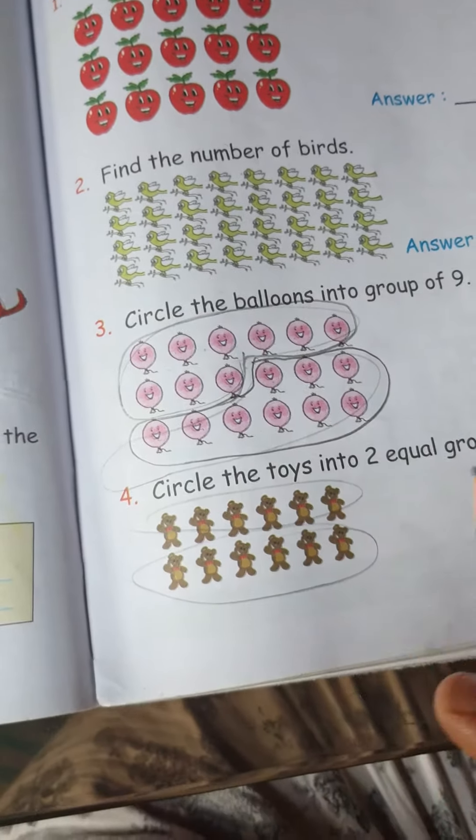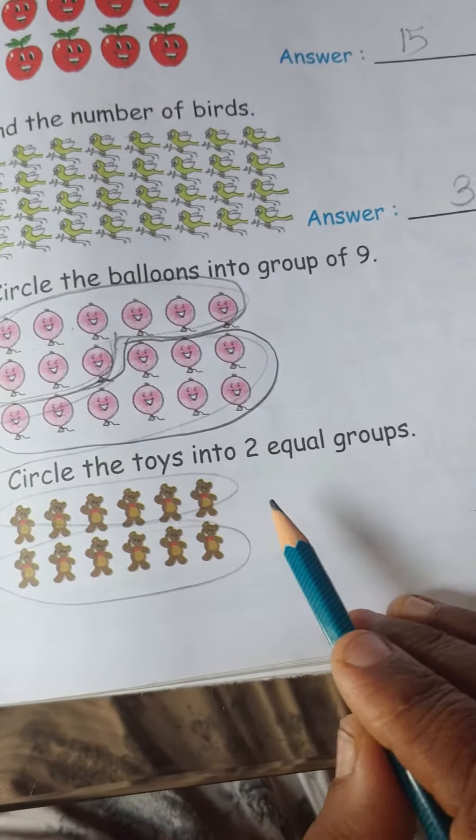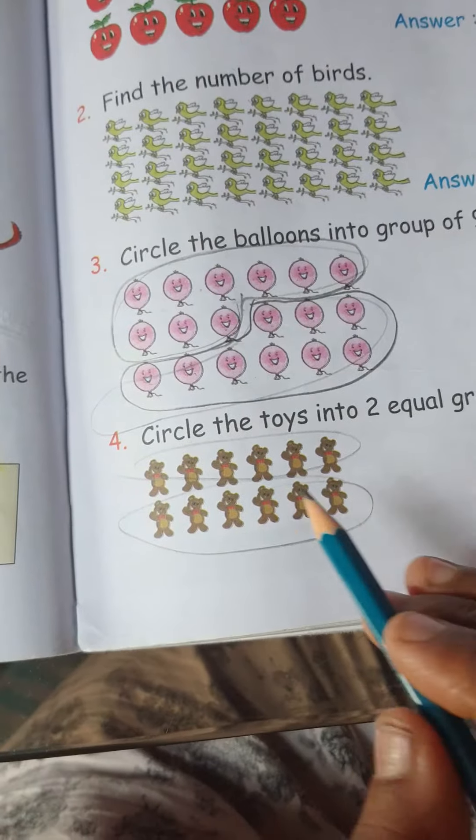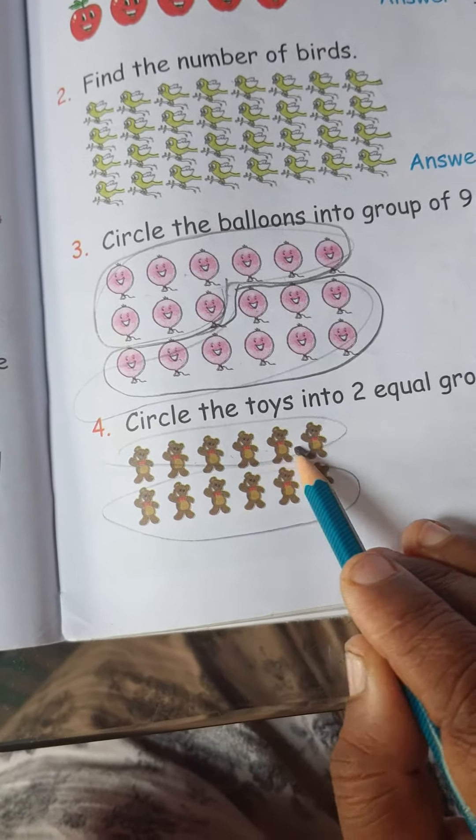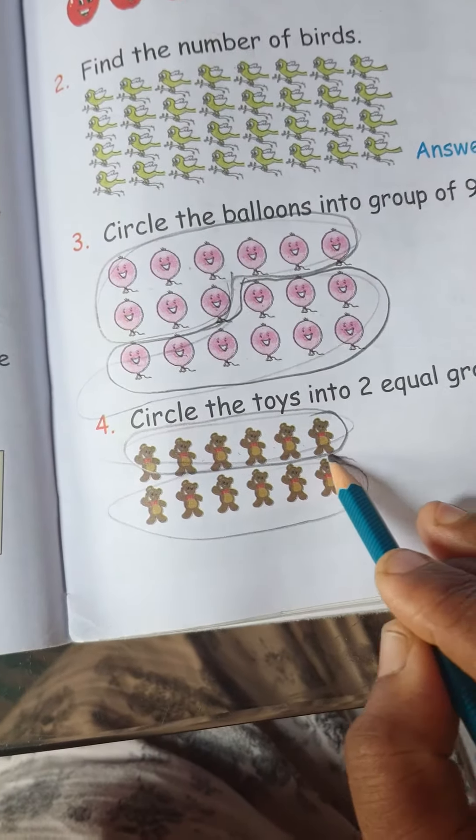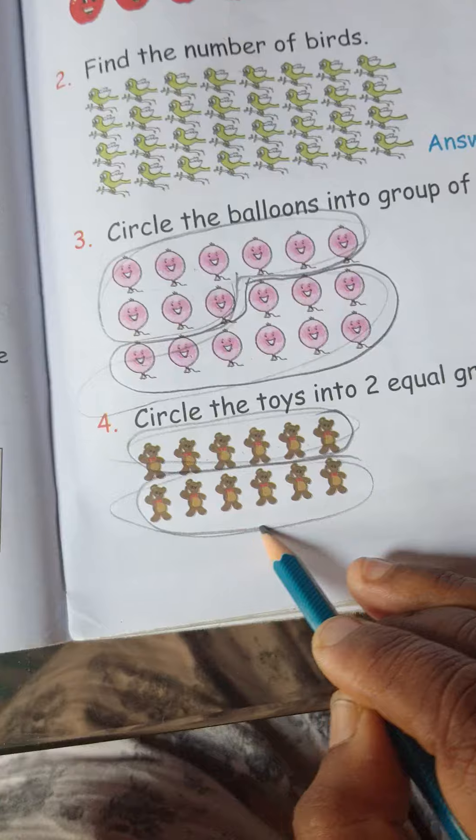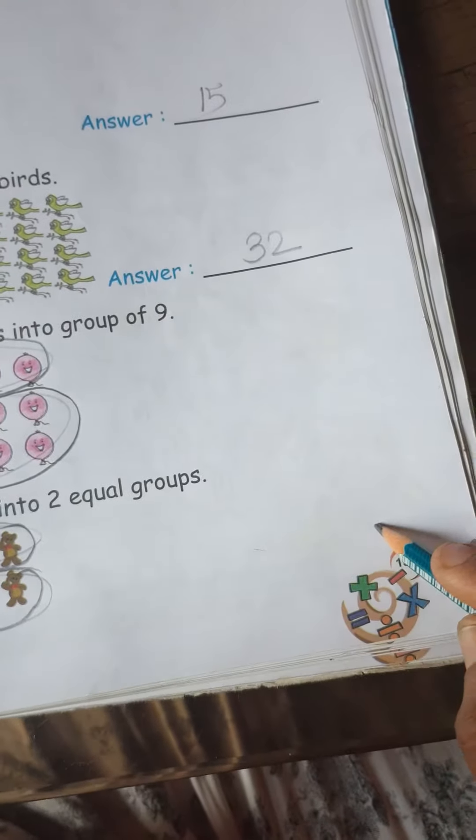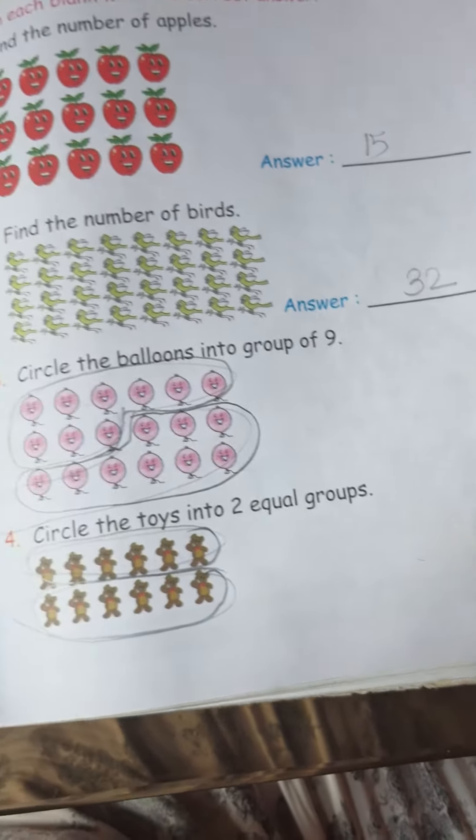Like this. Then circle the toys into two equal groups. Equal means same to same. Means 1, 2, 3, 4, 5, 6, this is the first group. And 1, 2, 3, 4, 5, 6, this is the second group. So this much here, CW. Hare Krishna.